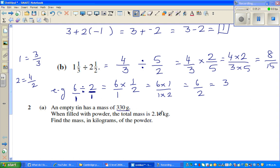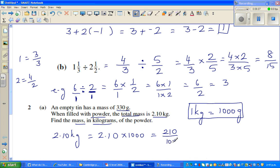An empty tin has a mass of 330 grams. When filled with powder, the total mass is 2.10 kg. Find the mass in kilograms of the powder. So I'm going to change first. You can do it in different ways, but I think it's easier to change this into grams. So you should know this fact. 1 kilogram, kilo stands for 1000, is 1000 grams. This is something that, basic fact you should know. So 2.10 kg is 2.1 times 1000. So this is same as 210 divided by 100, times 1000. So this 0 and the 0s can cancel. So this is 2100 grams.